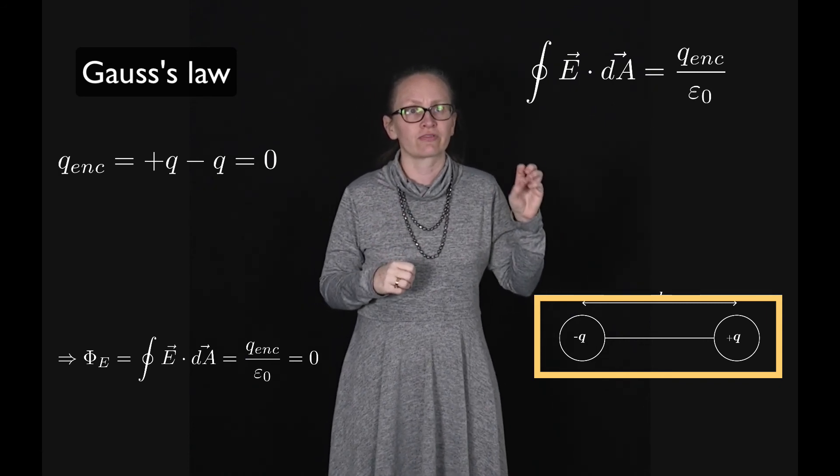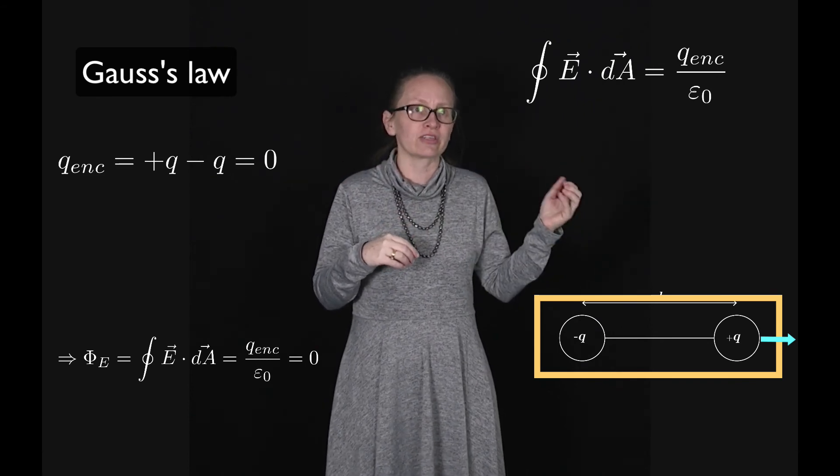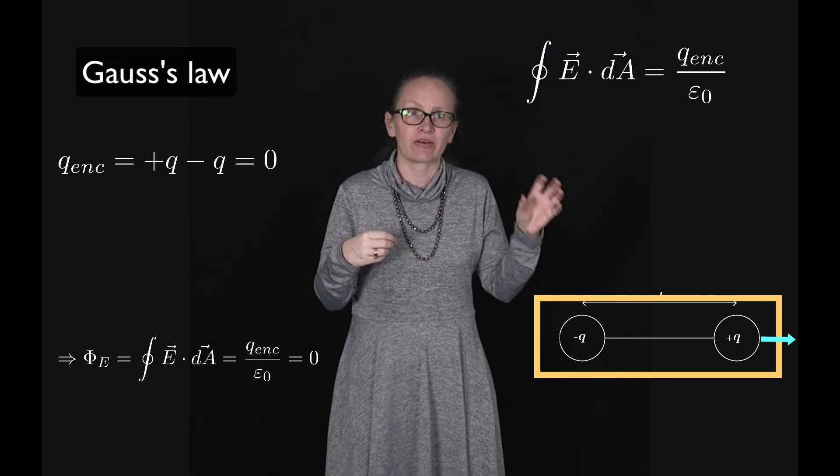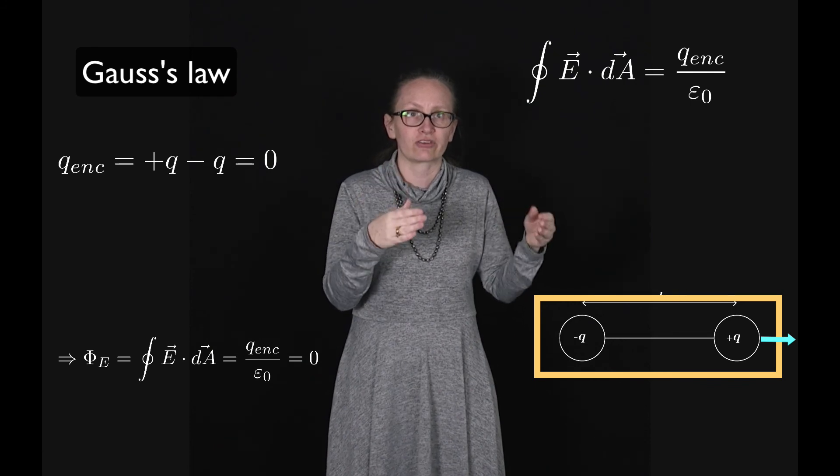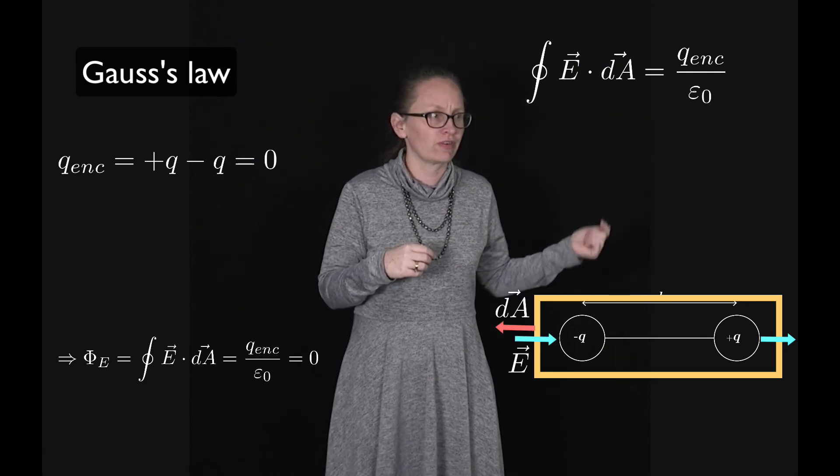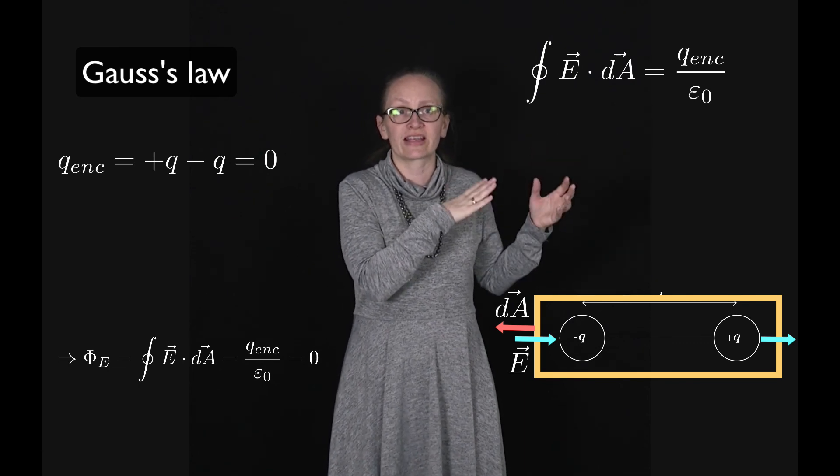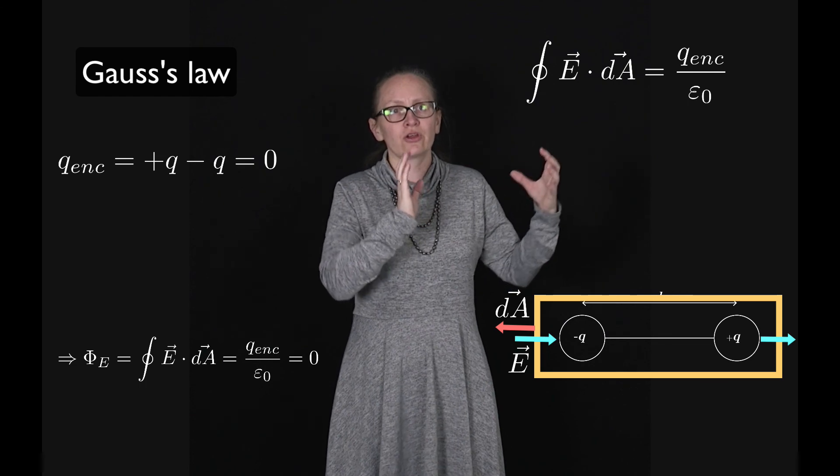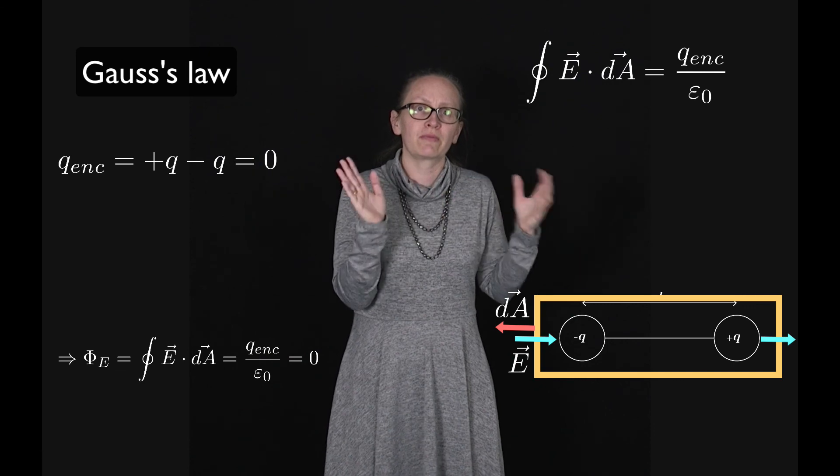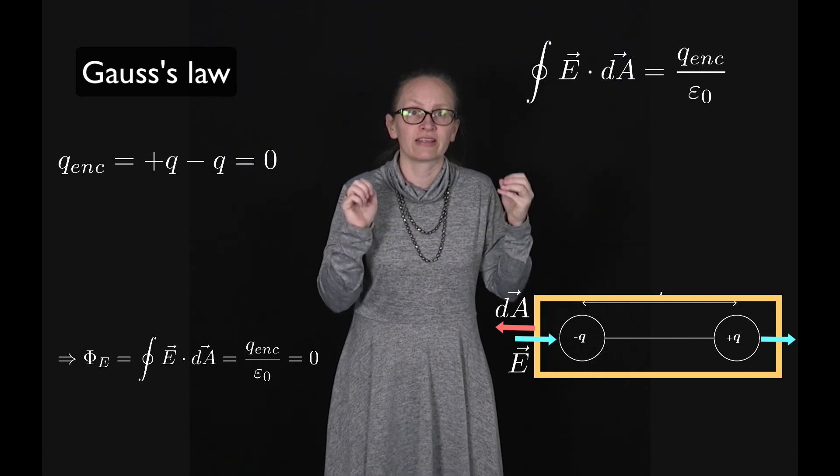If we think about a little section of the surface close to the positive charge, we've got the electric field lines going out and the area direction is also out, so these are in the same direction. We're going to get a positive contribution to the electric flux and hence the electric field there. Whereas close to the negative charge the electric field lines are going in while the area vector is going out, so this will contribute negatively to the flux. We'll have different fluxes at different parts on the surface, but when we add together the entire flux over the entire closed surface we're going to end up with zero.